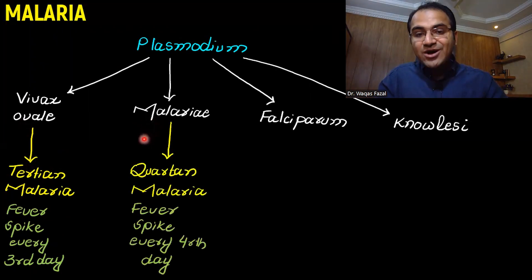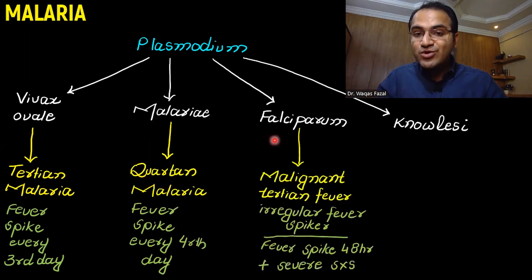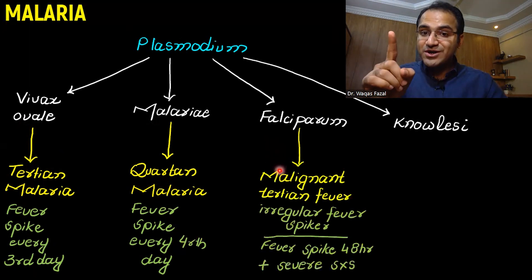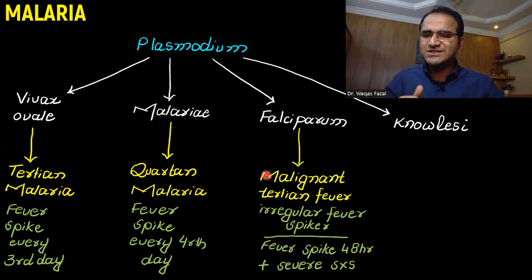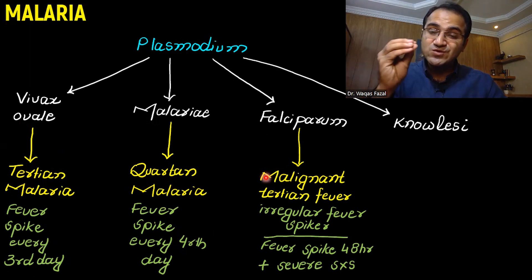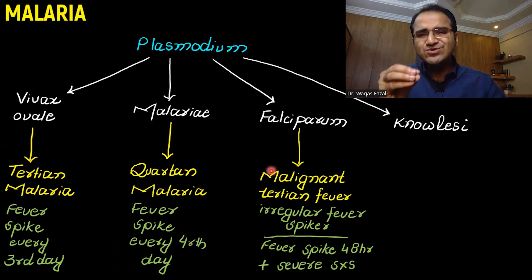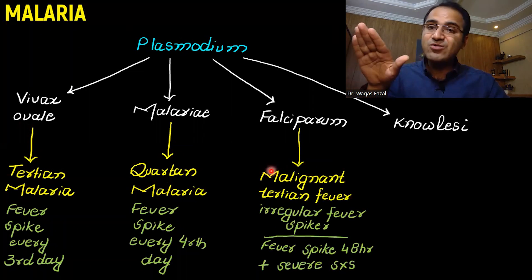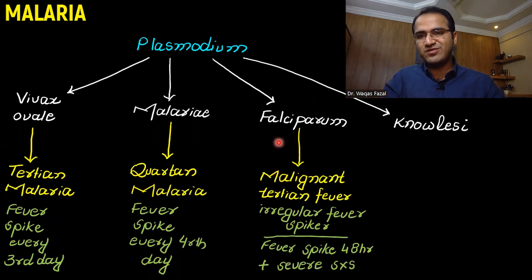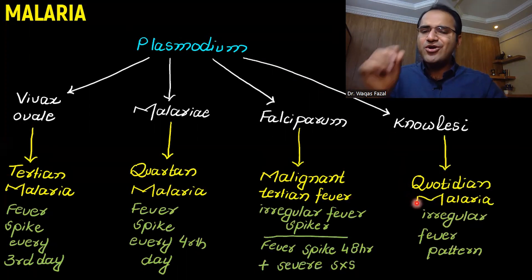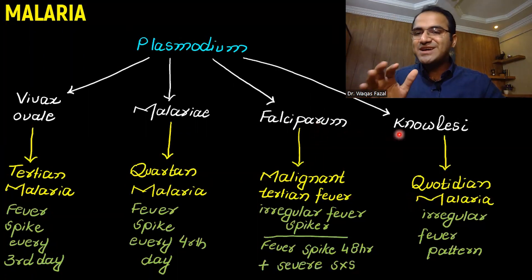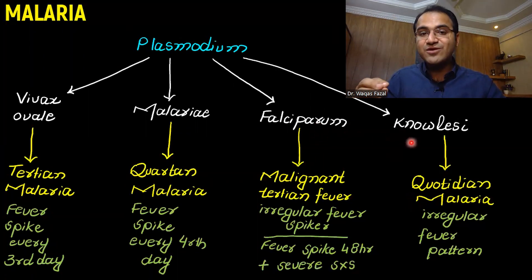In plasmodium malariae, you would see quartan malaria — a fever spike every fourth day. In plasmodium falciparum, it is called malignant tertian fever. It has an irregular fever spike pattern; fever can occur every 48 hours but is associated with severe symptoms and usually there is no clear fever pattern. Plasmodium knowlesi is also known to have an irregular fever pattern, so both falciparum and knowlesi have irregular fever patterns.